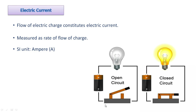There is also a key or switch in the circuit. When the switch is off, the circuit is not complete — there is a gap, so the wires are not joined and current cannot flow. As soon as you switch it on, the circuit becomes complete and current starts to flow.